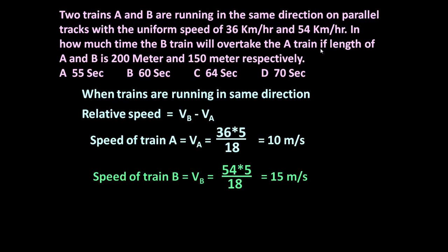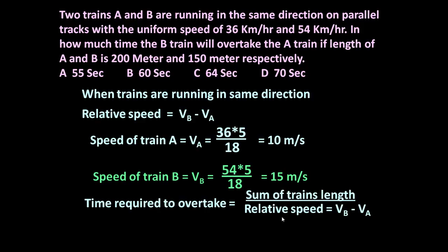Now we have to determine the time required - in how much time B will overtake train A if length of A and B is 200 meter and 150 meter respectively. So time required to overtake equals sum of train length divided by relative speed, that is VB minus VA. Sum of trains is 200 plus 150 equals 350, and relative speed is 15 minus 10 equals 5. So it is 350 divided by 5 equals 70 seconds. In 70 seconds train B will overtake train A.